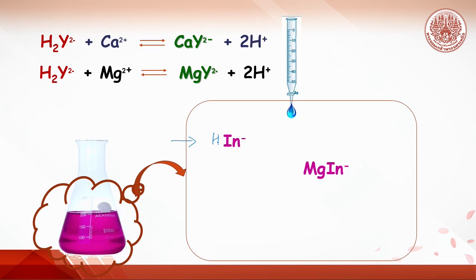So the color of the solution now will change from wine red to violet. But it is not the endpoint yet, until the MgIn complex is completely reacted with the EDTA, then sky blue appears. So the endpoint of the titration is observed by color change from wine red to sky blue.